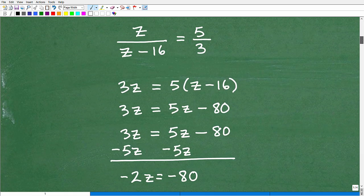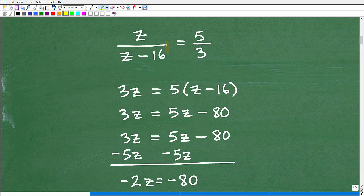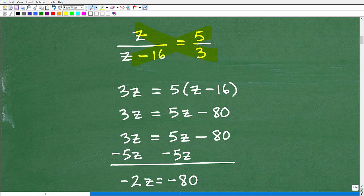Okay, so here is the work. And again, here's our proportion. I'm going to be multiplying across. So I have 3, 3 times z. That's right here, 3z. Now, this is the part that gets students in trouble.